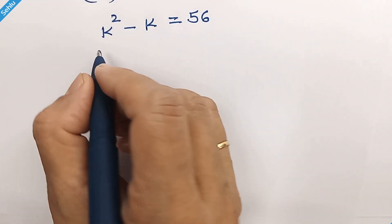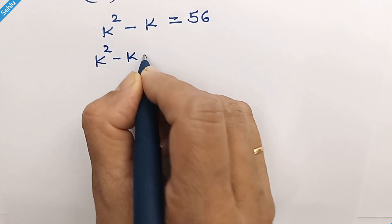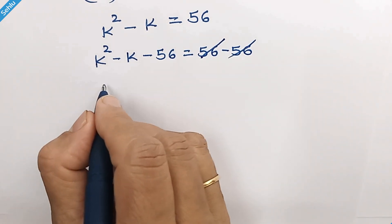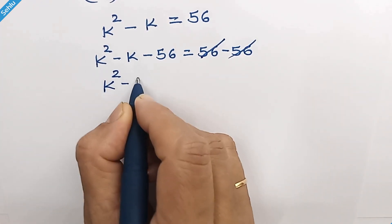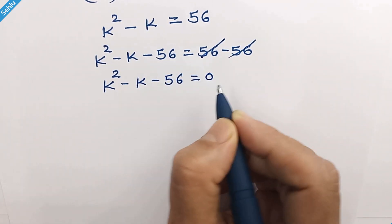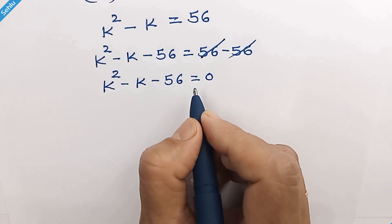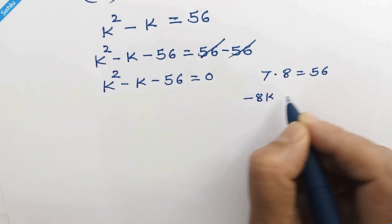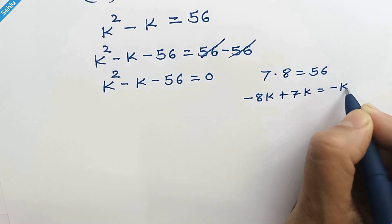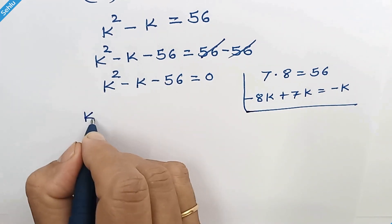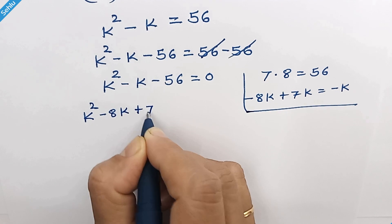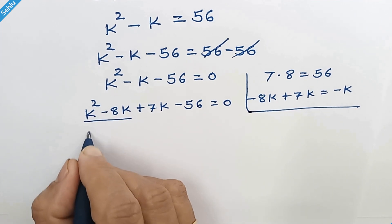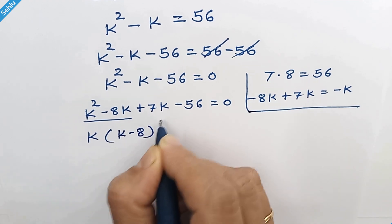Subtract 56 from both sides, so we have k squared minus k minus 56 is equal to 0. It is a quadratic equation and we can factorize this. We have 7 times 8 equal to 56, and negative 8k plus 7k equals negative k. So we can write k squared minus 8k plus 7k minus 56 equals 0, and factor out k to get k times k minus 8, plus 7 times k minus 8, equal to 0.